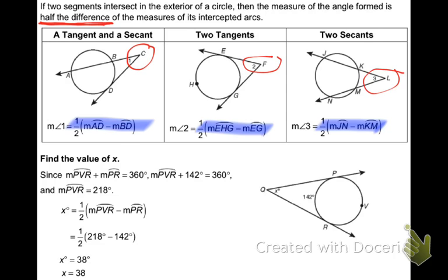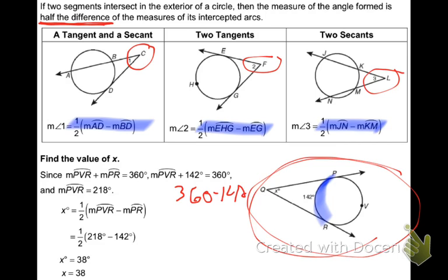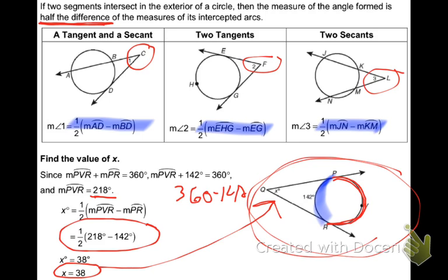Notice here, on the example, it tells me the arc here is 142. Well, how do you know what the other arc is? You would subtract from 360. Why would we subtract from 360? Because it's a whole circle, and it has to add up to 360. So 360 minus 142 is 218. So I did one half of 218 minus 142, which got me to 38 degrees. And there was my angle there. Good work.